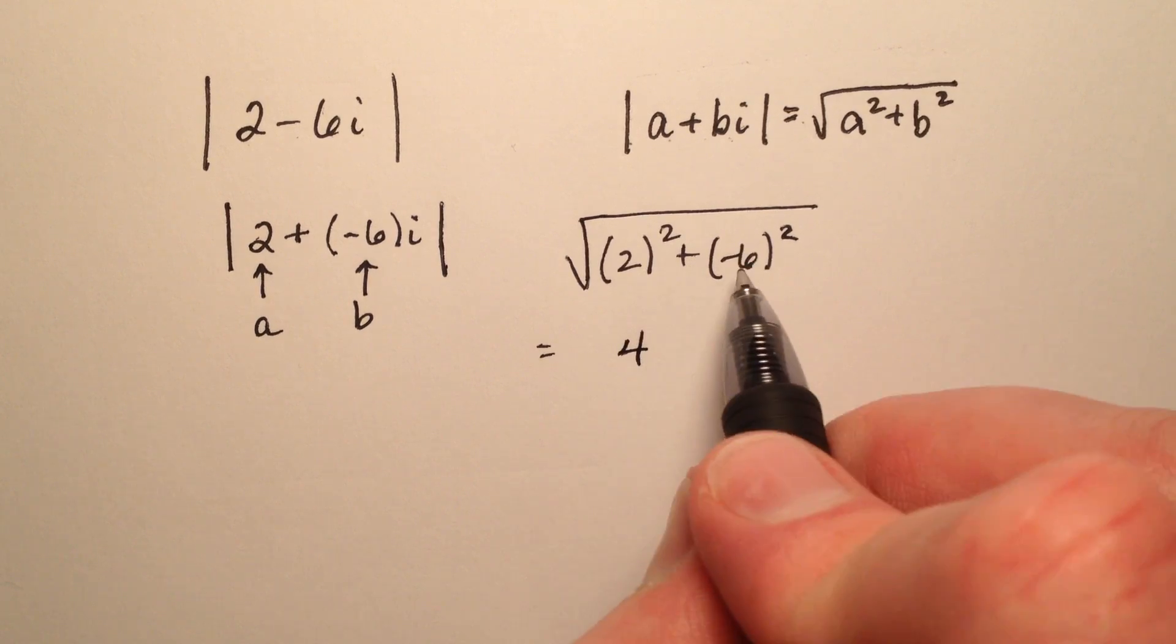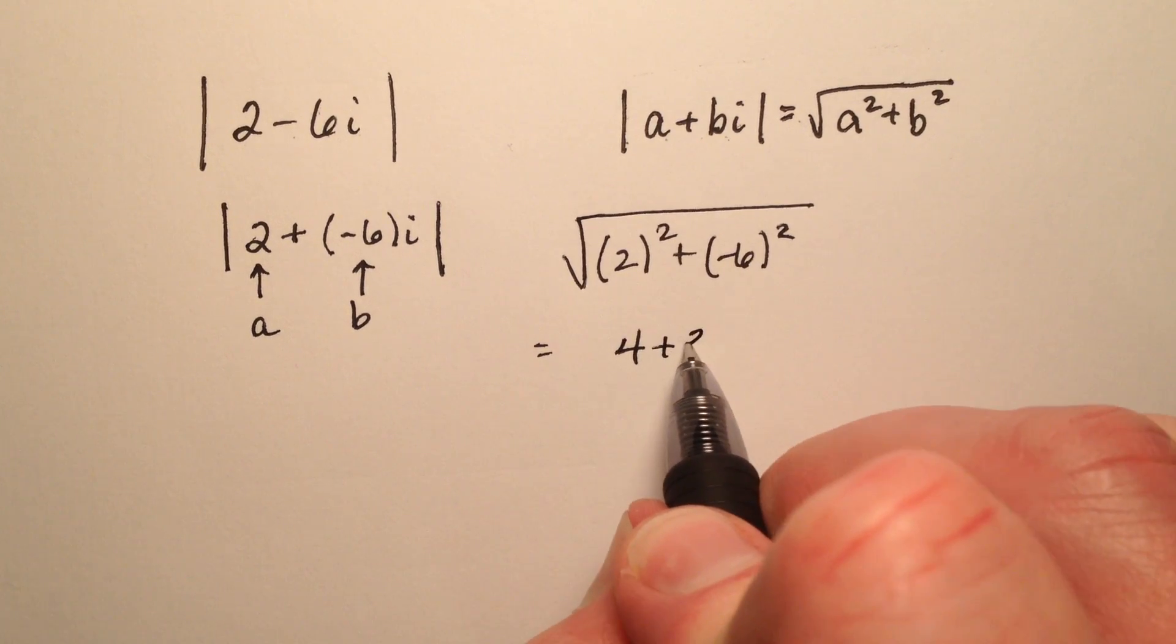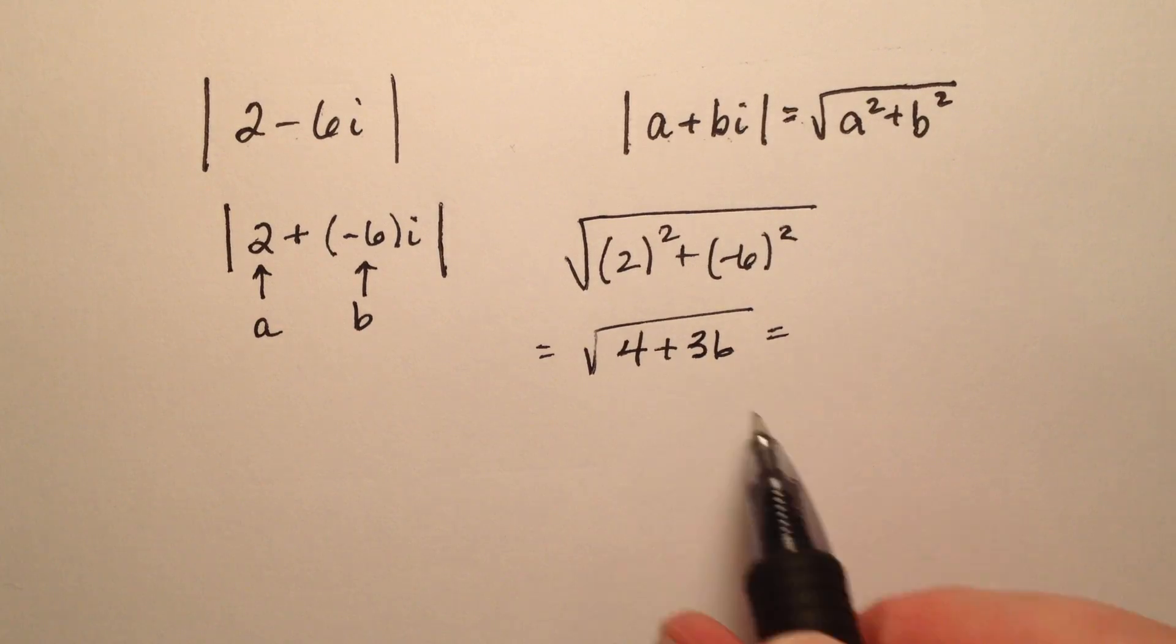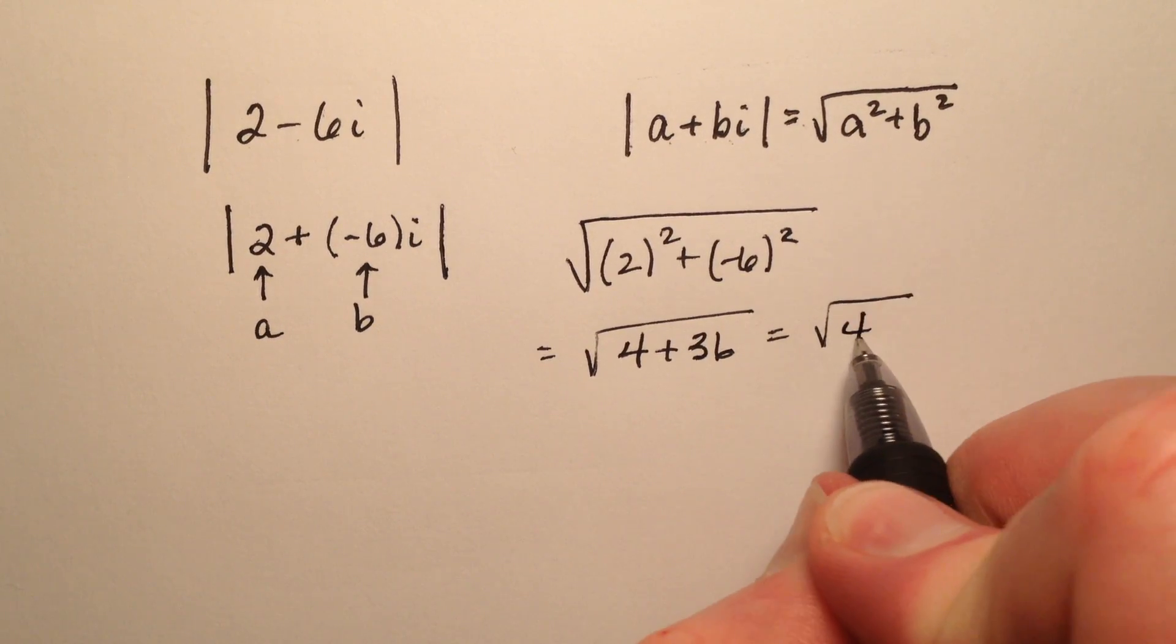2 squared is 4, negative 6 squared is 36, and 4 plus 36 will be the square root of 40.